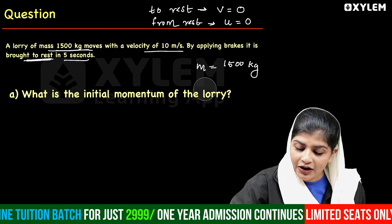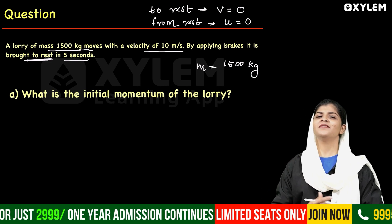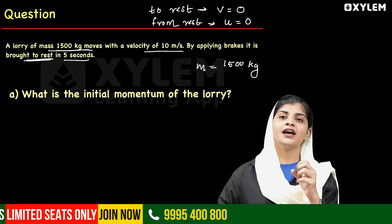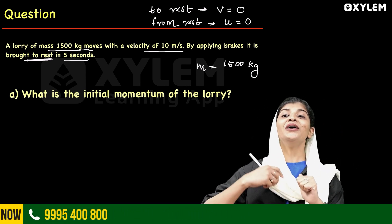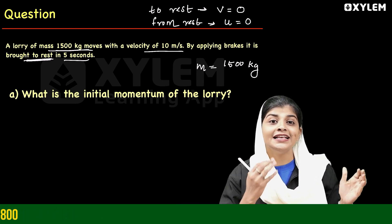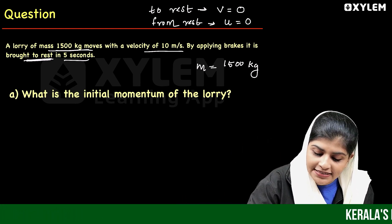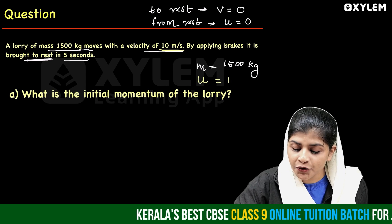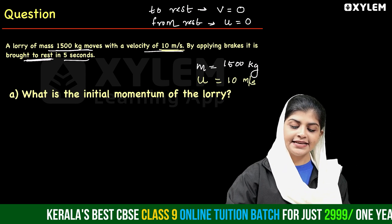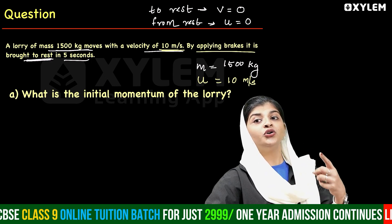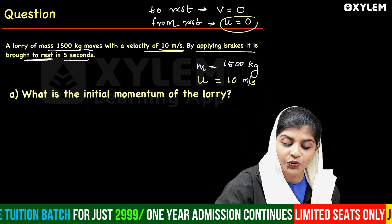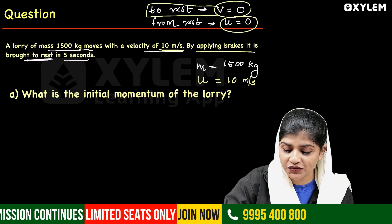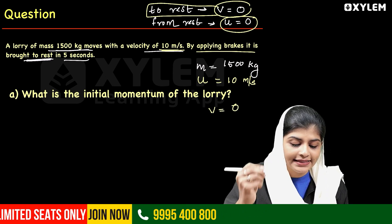There are two types of velocity: initial velocity and final velocity. The initial velocity — we know the velocity is 10 meters per second, so initial velocity U is equal to 10 meters per second. By applying brakes it is brought to rest, so final velocity V is equal to 0.